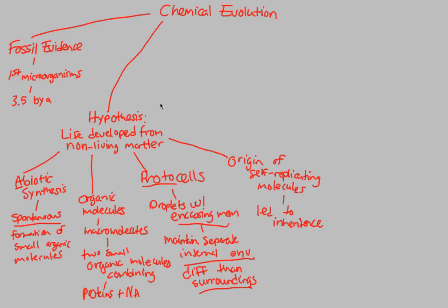So overall, we've learned so far in the chemical evolution, we have fossil evidence that states that our first microorganisms came about 3.5 billion years ago. And the major hypothesis involved with this chemical evolution, let's say, of going from chemistry into biology, going from chemicals into living matter, was the idea that life developed from non-living chemical matter.